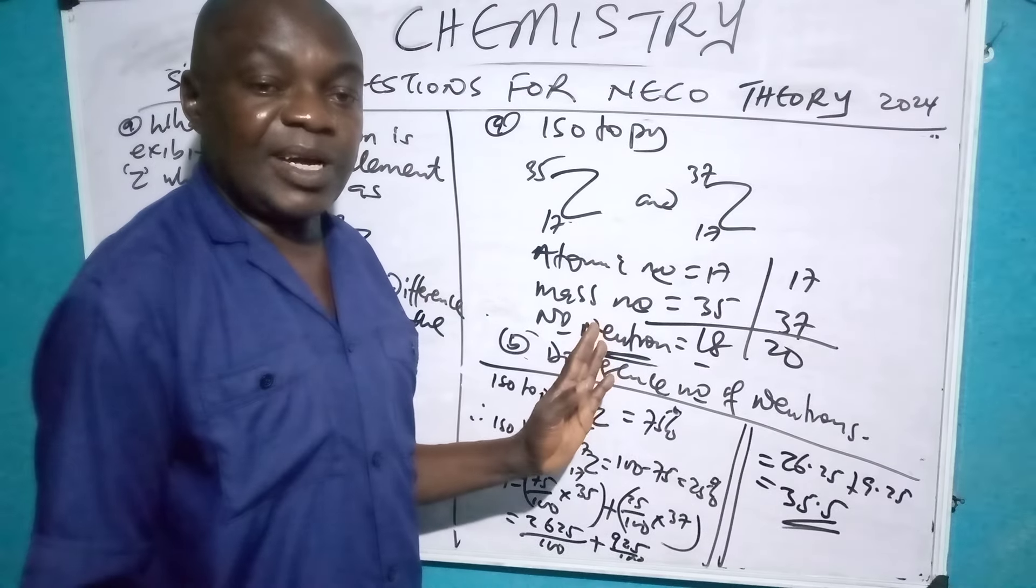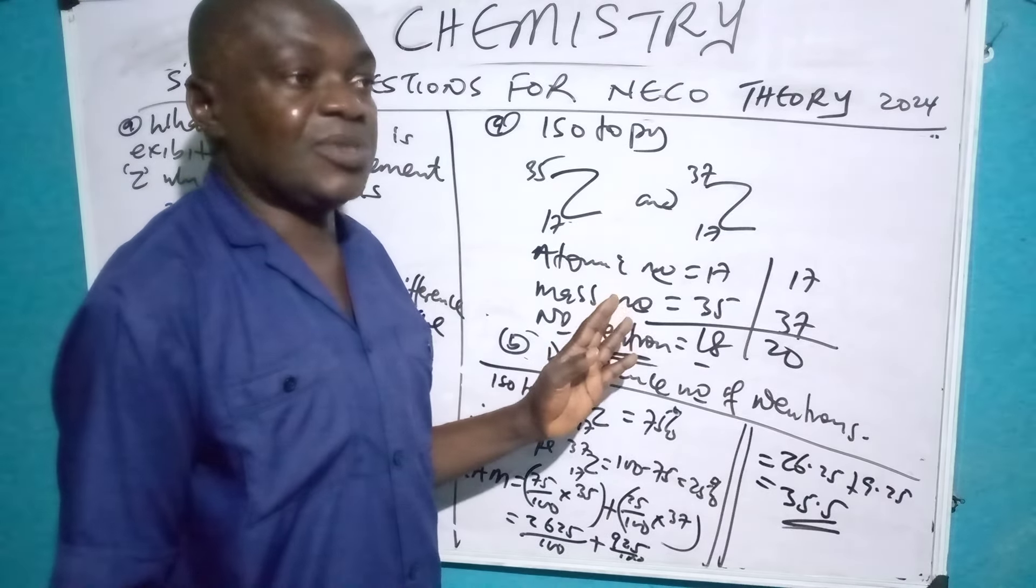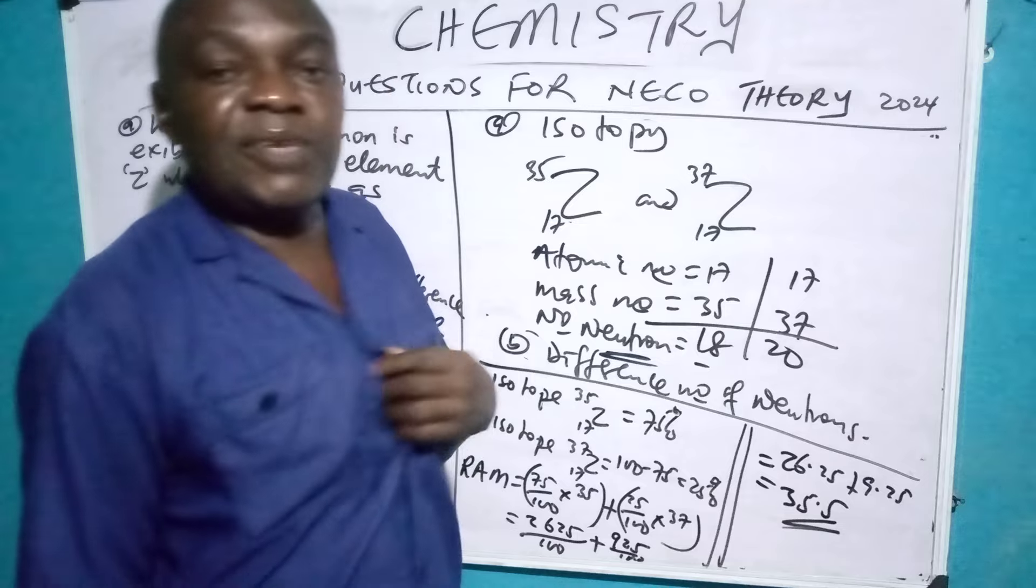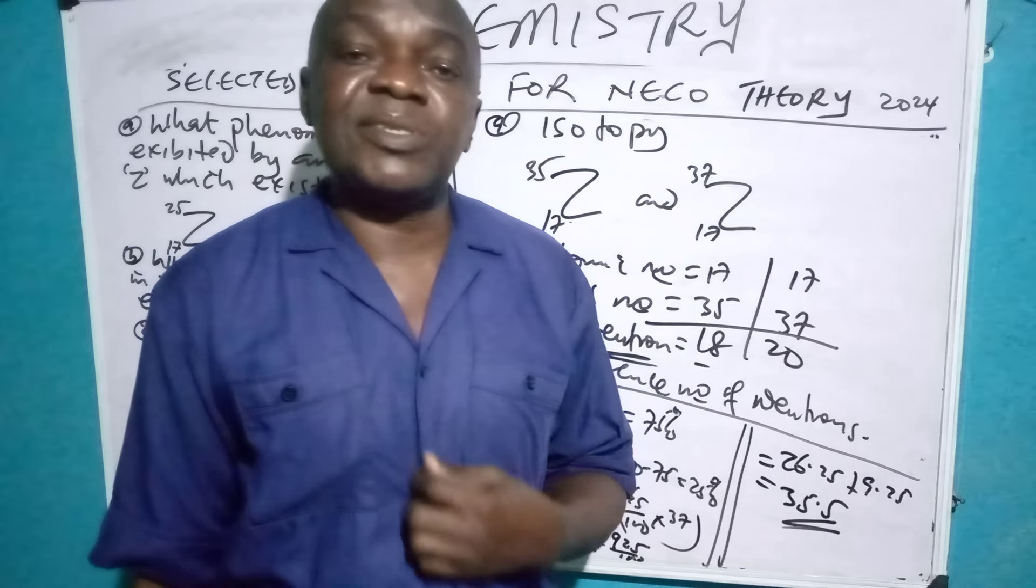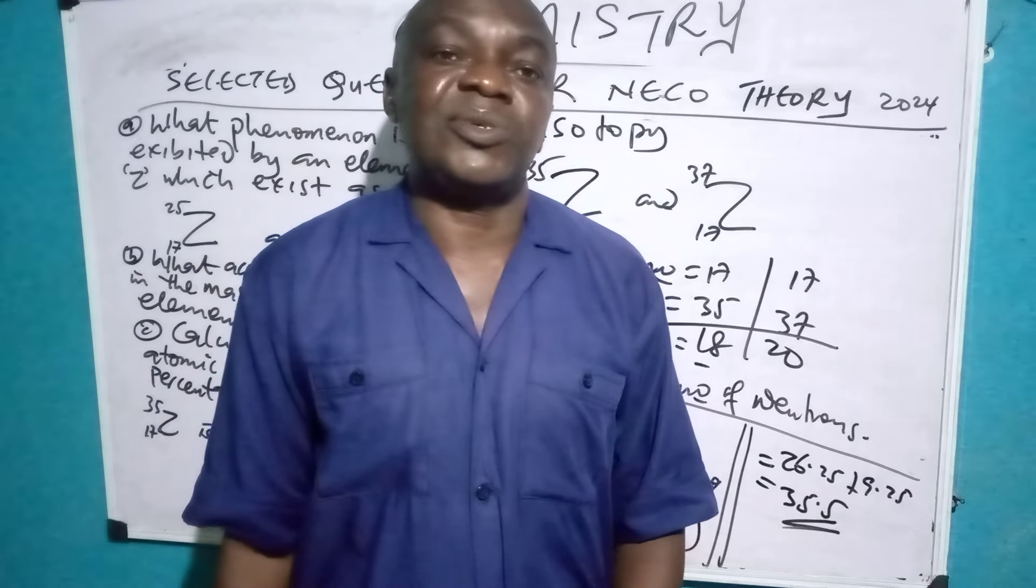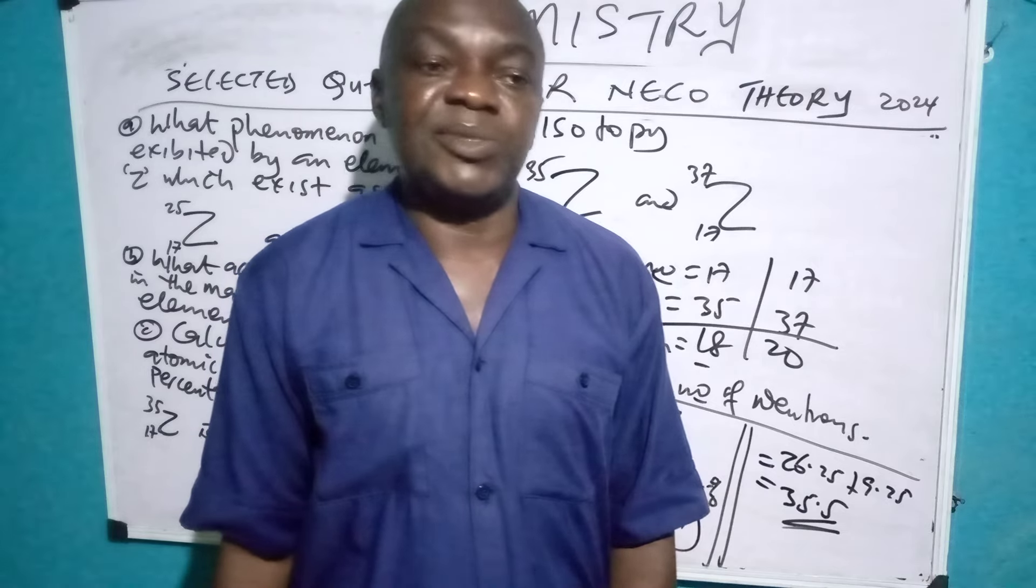So the relative atomic mass of Z is 35.5. This is how you carry out this simple calculation. Meaning this is how you can also calculate percentage abundance. Thank you very much for watching my video. Please kindly share it to your friends, press the like button and also subscribe if you have not done so. God bless you. Thank you.